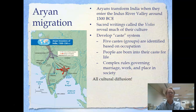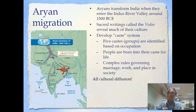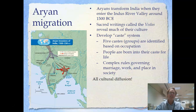The Vedas reveal that this is the beginning of the caste system in India — how they organized society. There were five different castes or social groups, identified by occupation from the highest to the lowest people. People were born into their caste and remained there for life, with no social mobility between castes and no job mobility between occupations. The caste system set up complex rules about who people could marry, what they could do for a living, and their place in society.